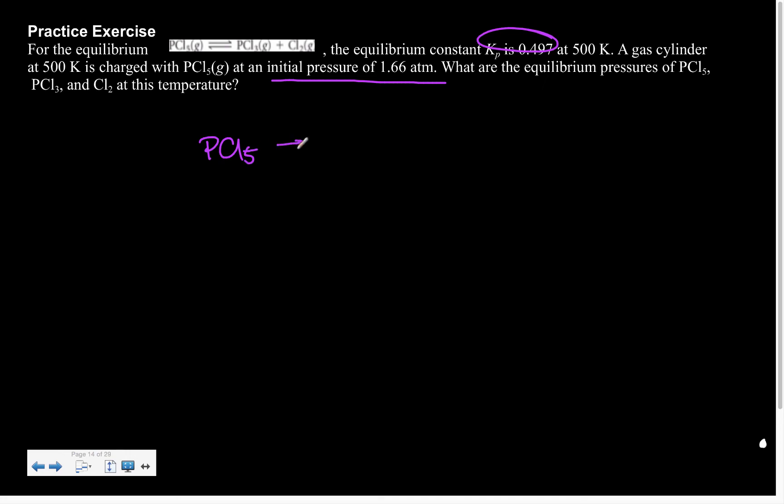Where we're going to start with our equation, which says PCl5, PCl3, and Cl2, all of which are gaseous. And initially, I know that I have 1.66 atmospheres of that, which means what about these? I know that I'm going to lose some of that. I'm going to gain this, and I'm going to gain this. And again, that's based on the relative stoichiometry. Which means that my equilibrium concentration is going to be 1.66 minus x. And this is going to be x and x.